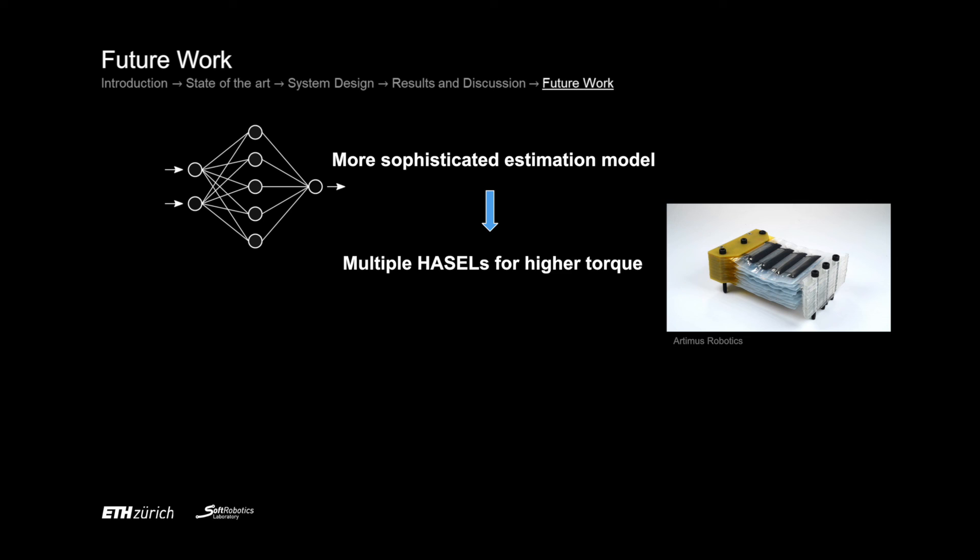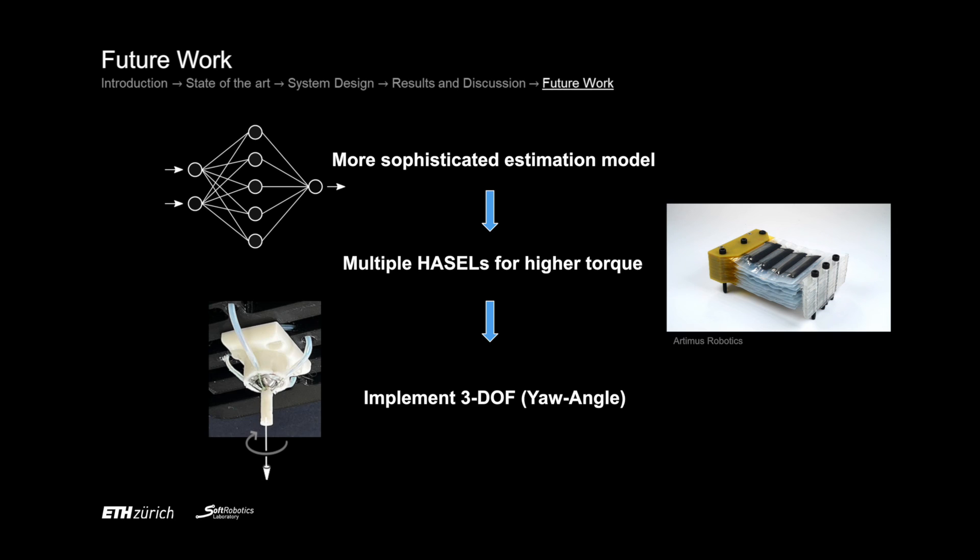Our study presents several limitations that open opportunities for future work. One could use a more sophisticated estimation model in the future to improve the performance in different environments outside the lab. Moreover, we are currently limited to achieving high torque outputs due to the constraints of the HASEL actuator. A solution would be to stack multiple HASELs on top of each other. Finally, one could also implement the third degree of freedom to more closely resemble the human shoulder.